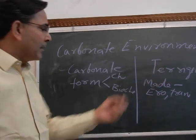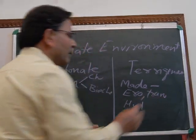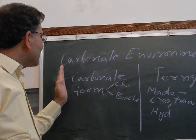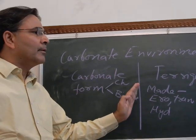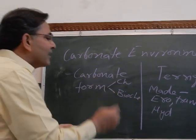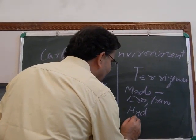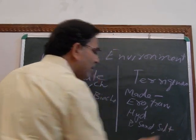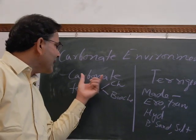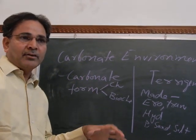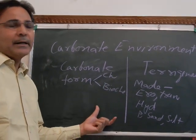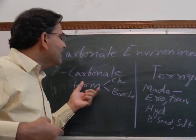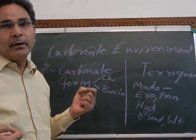In the case of pterigenous sediments, hydrodynamics or hydraulic input is very important, whereas in the case of carbonate sediments there is no role of fluid dynamics. In pterigenous sediments, grain size — pebble, cobble, sand, and silt — explains the energy of the depositional environment. Whereas in carbonate sediments, size is not important but composition is important; grain size does not indicate the energy of the depositional environment.